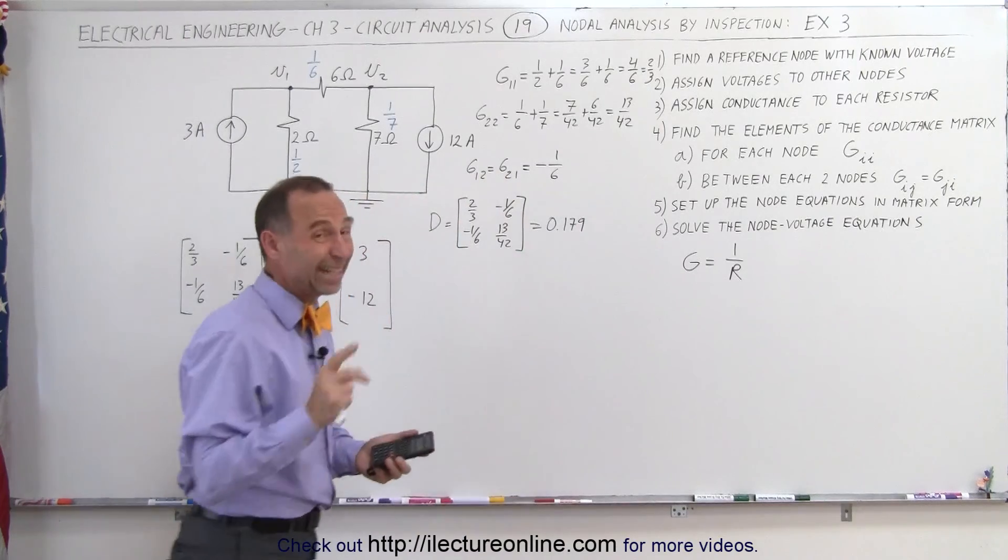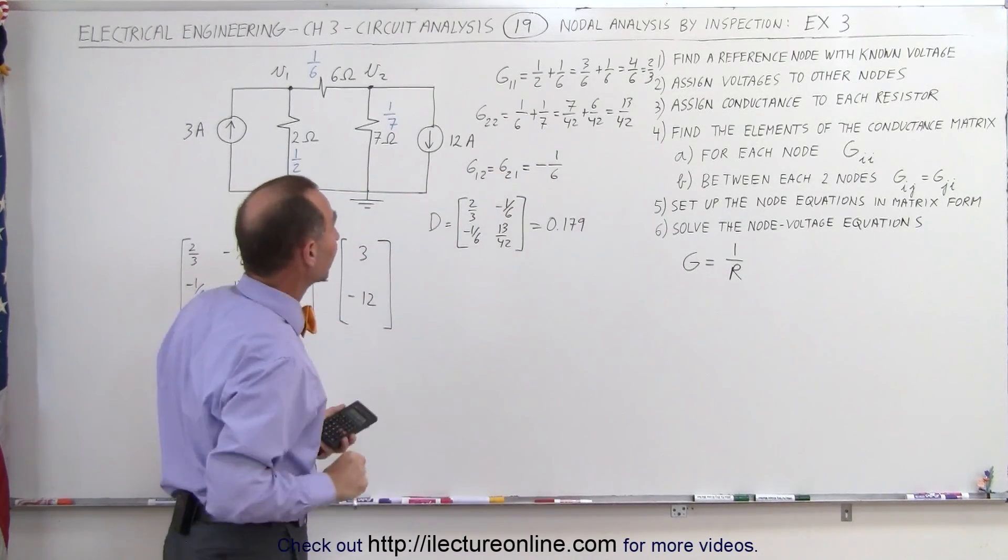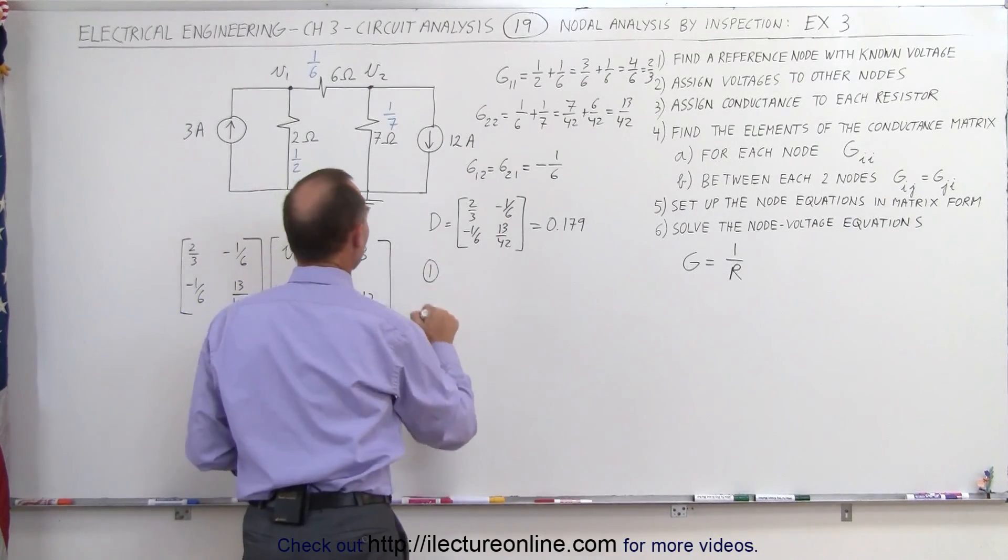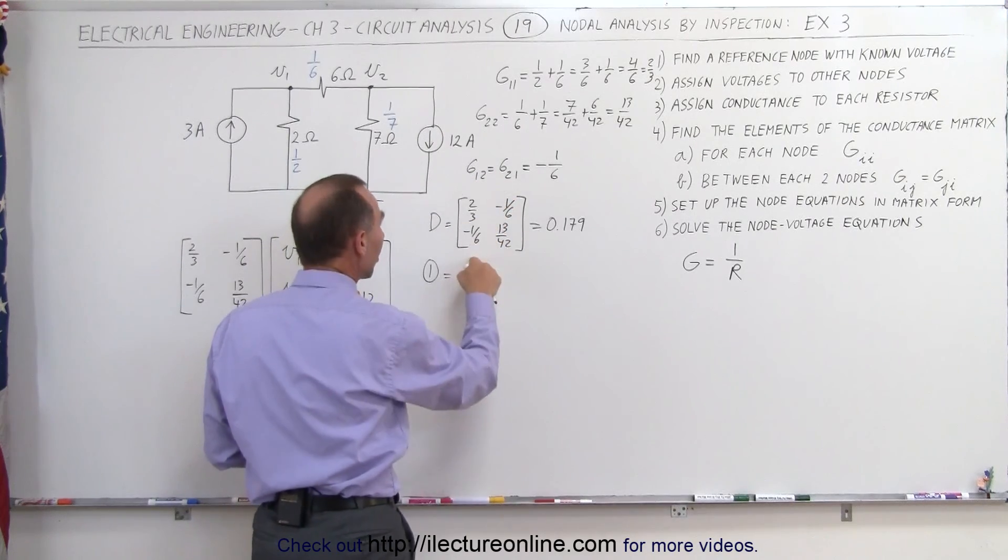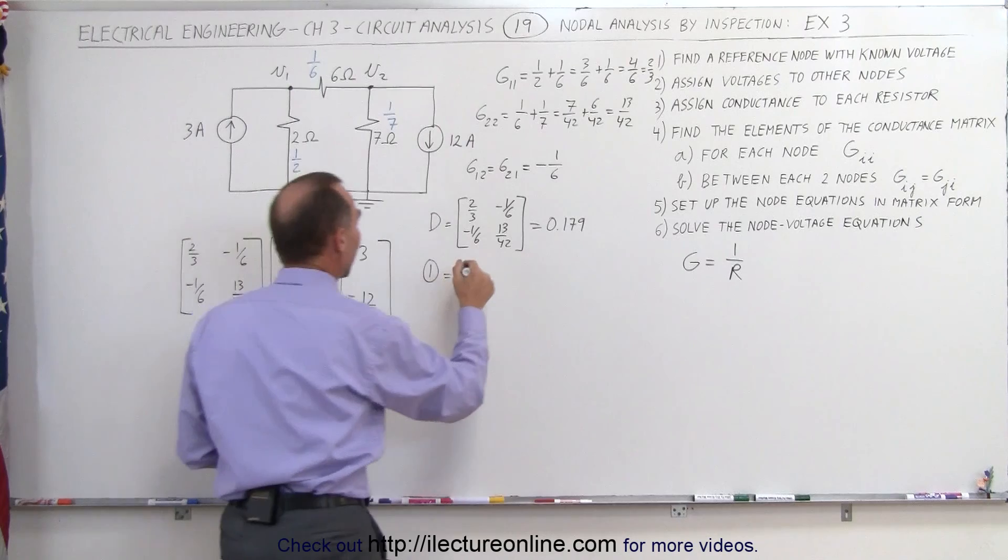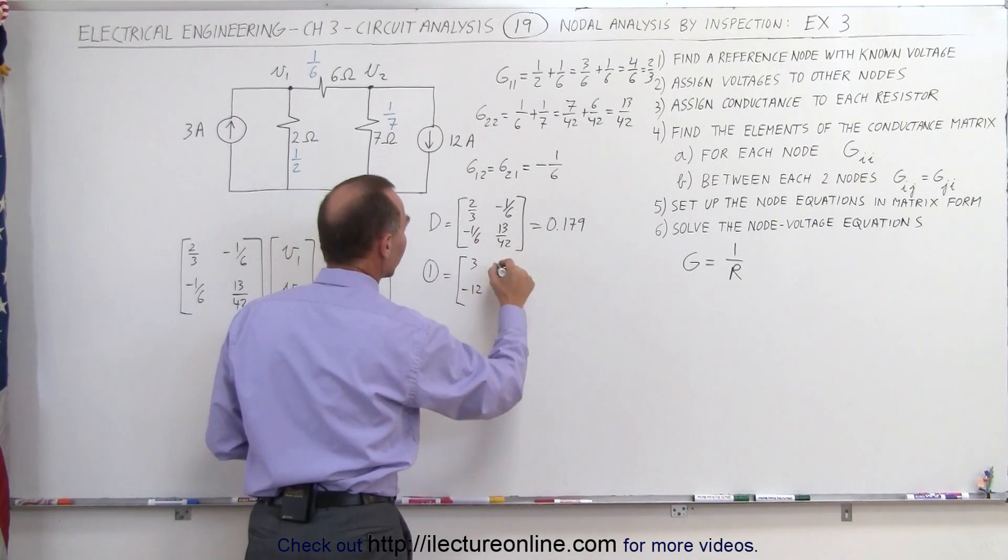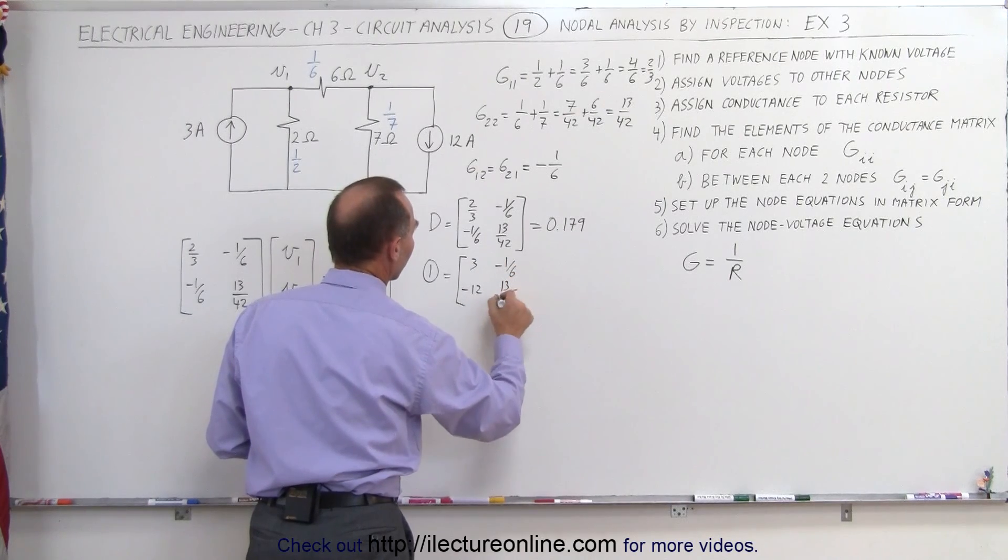Okay, quickly checking that again to make sure I did not make any mistakes. So yes, I get the same result, always good thing to check. Now to find the first matrix, to find V1, what we do is we take the determinant matrix and we replace the first column by the currents that we have from the current matrix, 3 minus 12, we keep those elements the same, 1 over 6 or minus 1 over 6, 13 over 42.